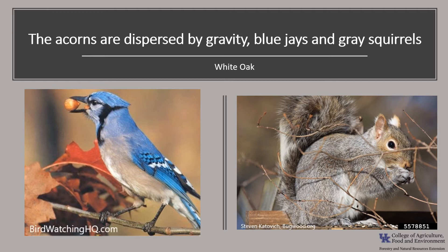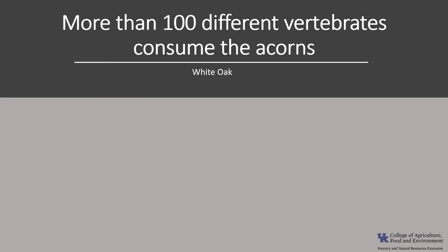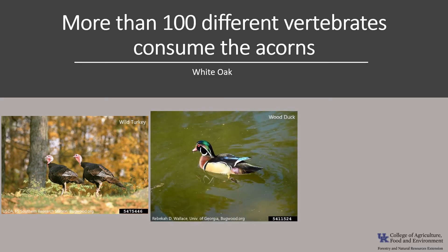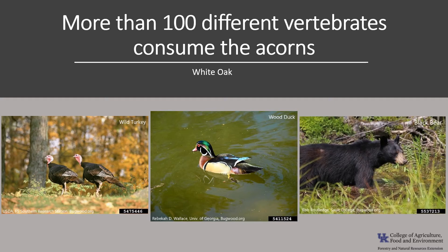Wind and gravity aid in the dispersal of acorns. Wildlife are also responsible for acorn dispersal, including blue jays and gray squirrels, both of which are effective in dispersing seed a distance from the parent tree. Acorns are an important wildlife food and are consumed by more than 100 different vertebrates, including birds such as wild turkey, blue jays, northern bobwhite, wood duck, and ruffed grouse. Mammals that eat the acorns include red squirrel, rabbits, and black bear. In some areas, black bear reproductive success is affected by the success or failure of the acorn crop.